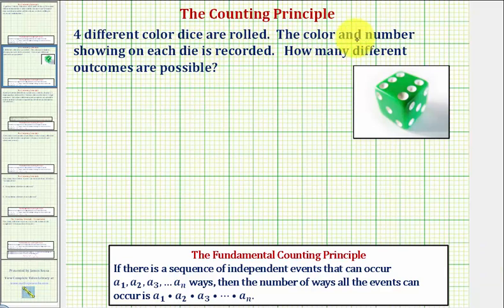Four different colored dice are rolled. The color and number showing on each die is recorded. How many different outcomes are possible?